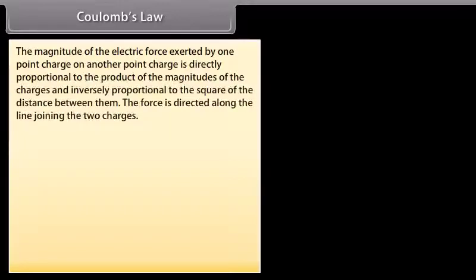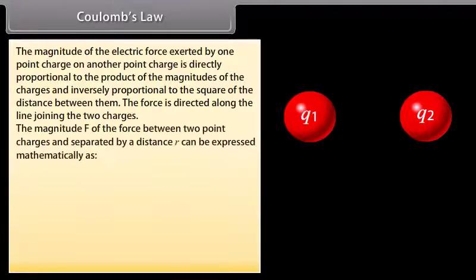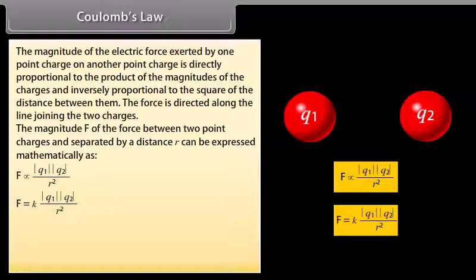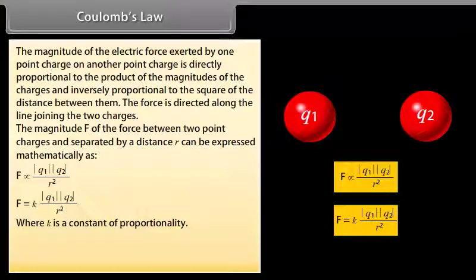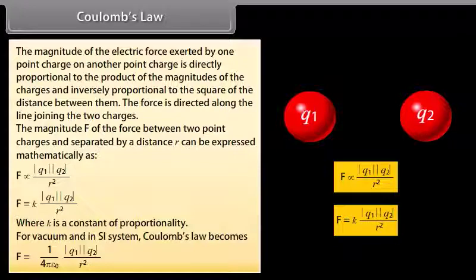Coulomb's law: The magnitude of the electric force exerted by one point charge on another is directly proportional to the product of the magnitudes of the charges and inversely proportional to the square of the distance between them. The force is directed along the line joining the two charges. Mathematically, F = k|q₁||q₂|/r². In SI units for vacuum, this becomes F = (1/4πε₀) × |q₁||q₂|/r².